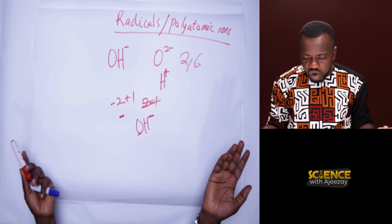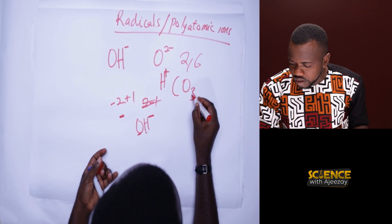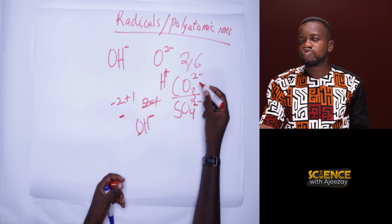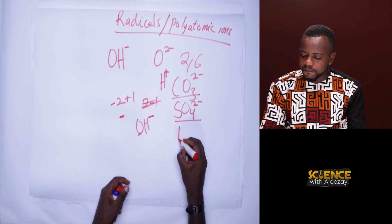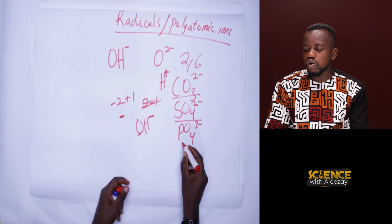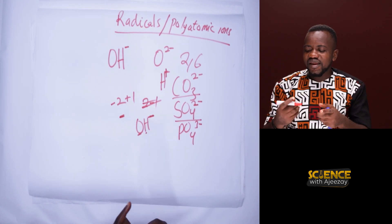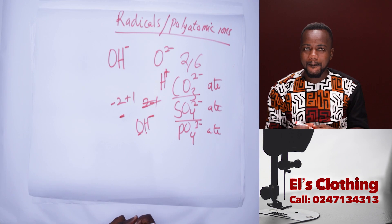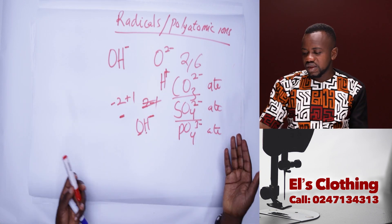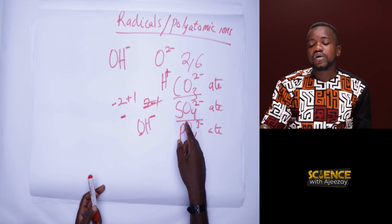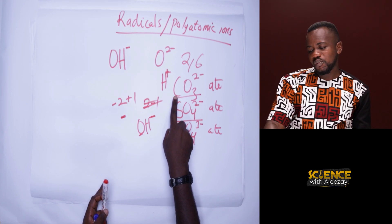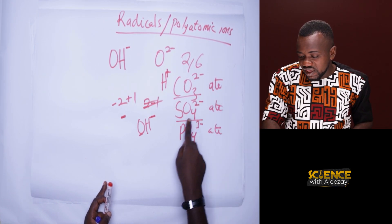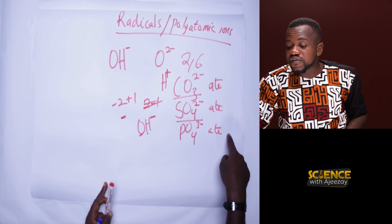You can have numerous radicals. We have CO₃²⁻, which is called carbonate. We have SO₄²⁻, which is called sulfate. We have PO₄³⁻, which is called phosphate. When an atom combines with oxygen, that is where we get these ATE names.